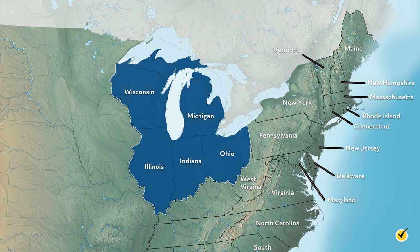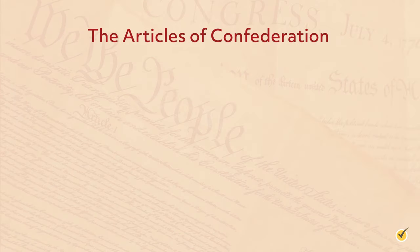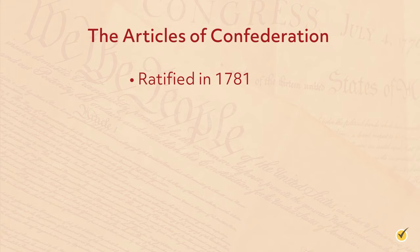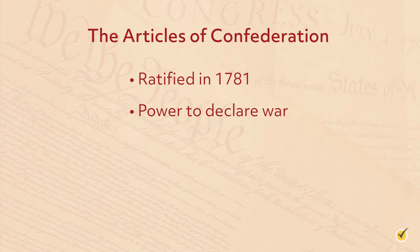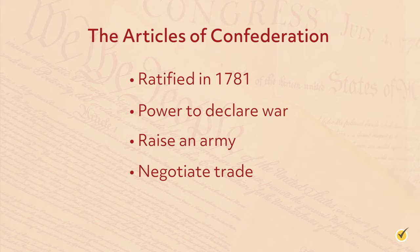The central government of the United States at this time was extremely limited in its power. The Articles of Confederation had been drafted around the same time as the Declaration of Independence and were finally ratified in 1781. The Articles granted the Congress of the Confederation the power to declare war, raise an army, and negotiate trade, but little to no ability to raise funds. Any changes required the agreement of nine of the thirteen colonies and could not overrule the state assemblies. It was apparent to many that the Articles were more of a temporary wartime measure than a long-term solution.